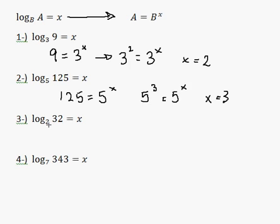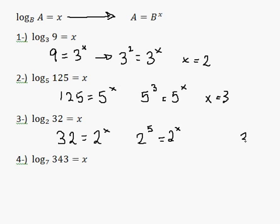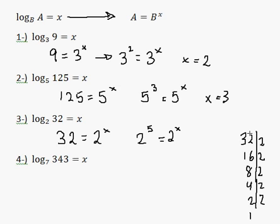Okay, and now, same thing — we kick the 2 over: 32 is equal to 2 to the power of x. 32 is 2 to the power of 5. And if you don't know that, you can easily decompose 32 into 2's: 32 divided by 2 is 16, divided by 2 is 8, divided by 2 is 4, divided by 2 is 2, divided by 2 is 1. This means 32 is 2 times 2 times 2 times 2 times 2, or 2 to the power of 5. Therefore, 2 to the power of 5 is equal to 2 to the x, so x is equal to 5.